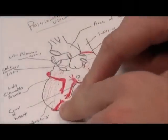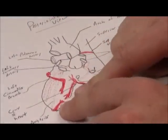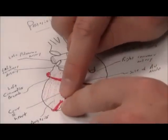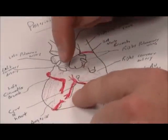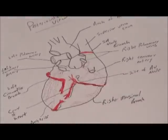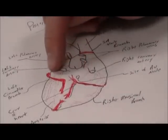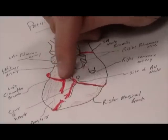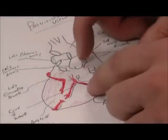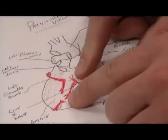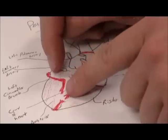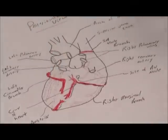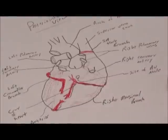Down here you can see where the anterior descending artery wrapped around the apex of the heart and comes in close contact with the posterior descending branch of the right coronary artery. The circumflex branch wraps around the heart and travels almost to where the right coronary artery branches off into the posterior descending. It also descends slightly downward and supplies the posterior aspect of the left ventricle with blood.